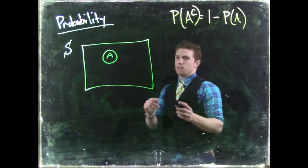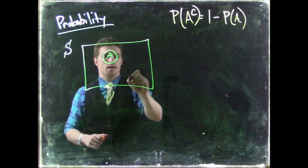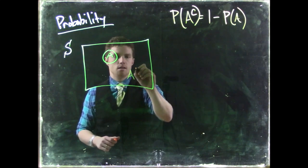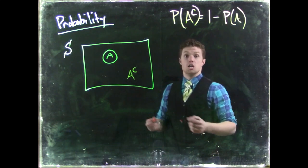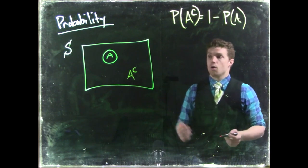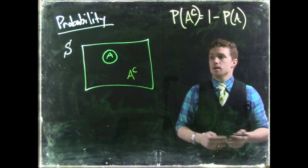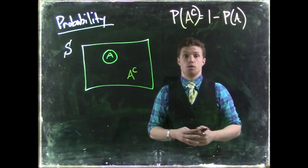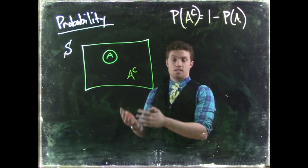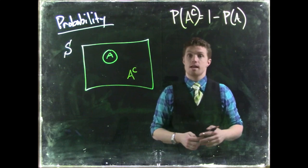So essentially, if we go back to our picture, if this is event A, A complement is everything that is not A. Or if A was the dice rolls that sum up to three, A complement would be all dice rolls that exist, except those ones that add up to three.